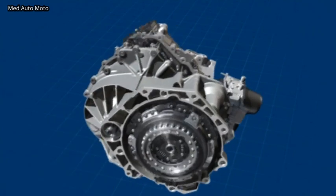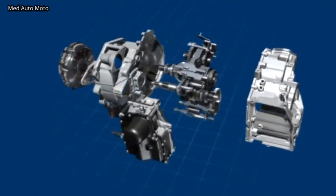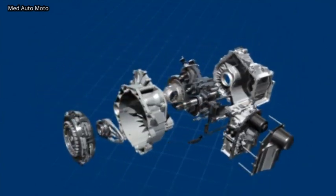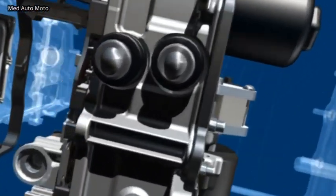Each of these gearbox sections features its own automatically actuated clutch. One gearbox section covers the gears 1, 3, 5 and 7. And the other, gears 2, 4, 6 and reverse.